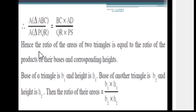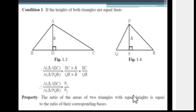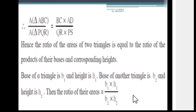So the ratio of areas of two triangles is equal to the ratio of the products of their bases and corresponding heights. If base of the first triangle is b1 and height is h1, and base of the second triangle is b2 and height is h2, then the ratio of their areas equals b1 × h1 upon b2 × h2, where b1, b2, h1, and h2 are not zero.